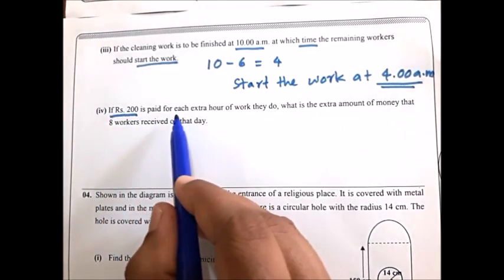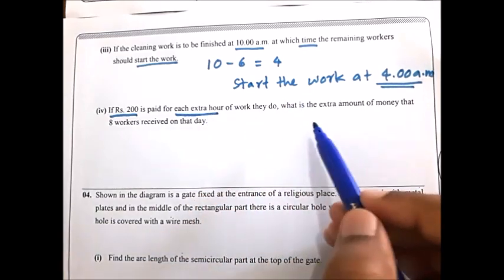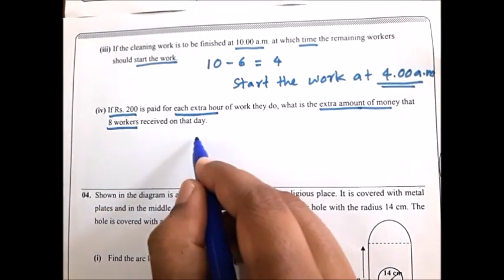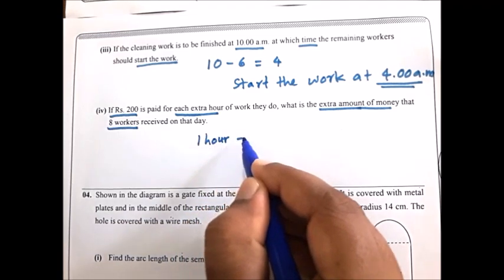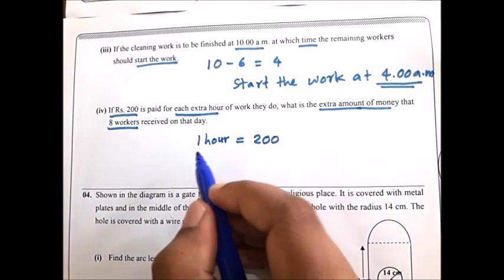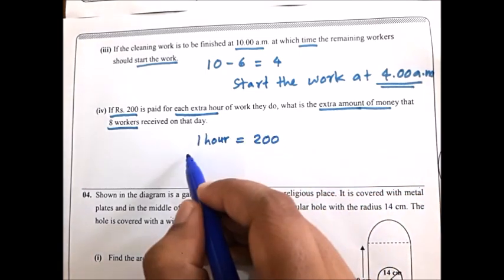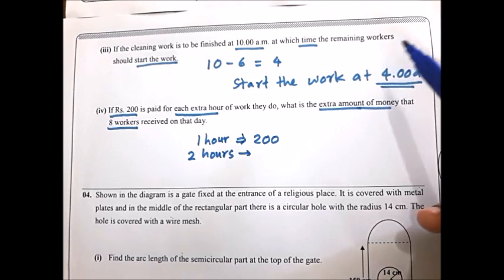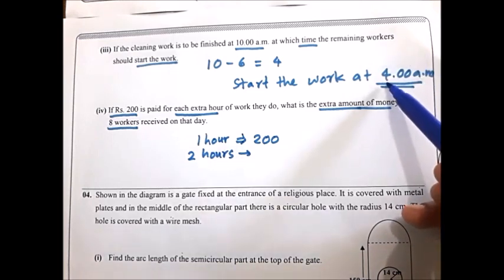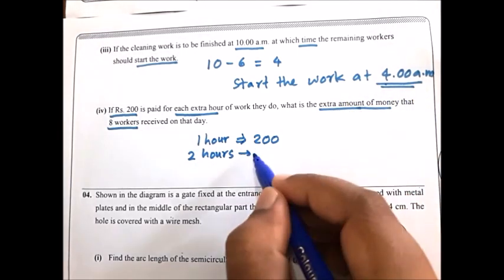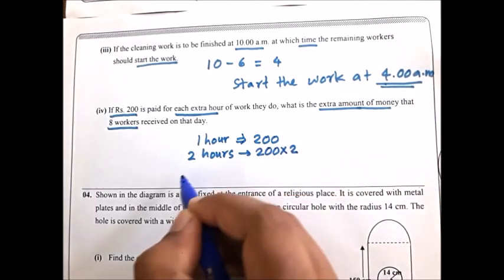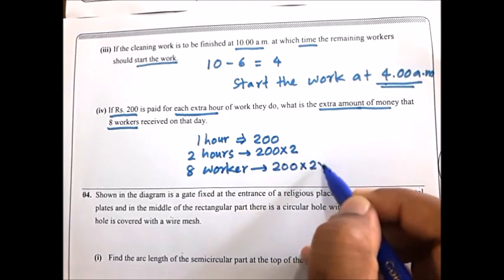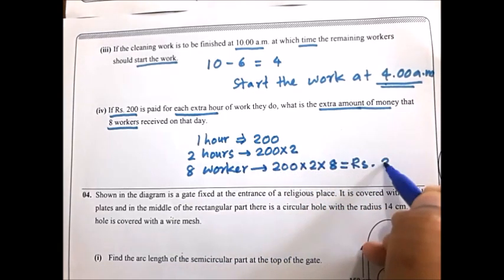Fourth part: if 200 rupees is paid for each extra hour, what is the extra amount to pay 8 workers on that day? They work 2 extra hours (starting at 4 am instead of 6 am). 200 multiplied by 2 is 400 rupees per worker. Multiply by 8 workers: the answer is 3,200 rupees.